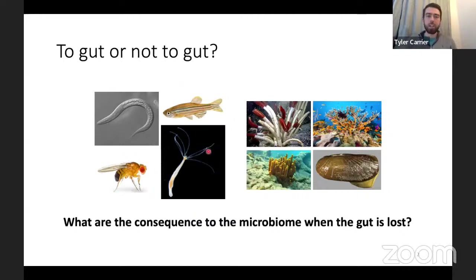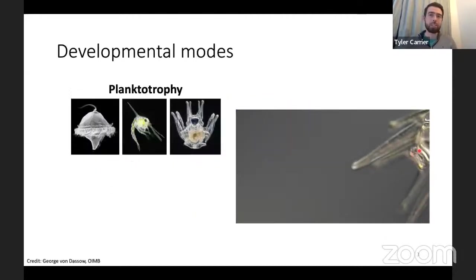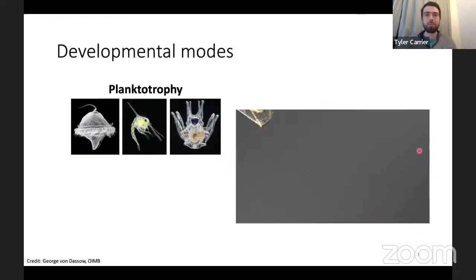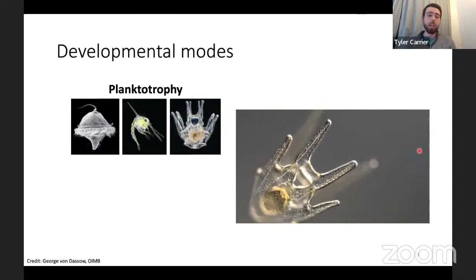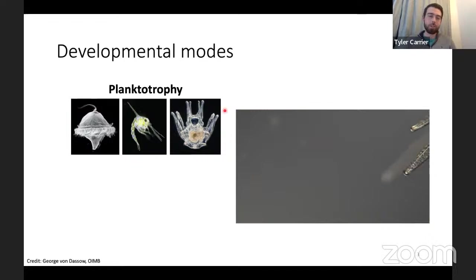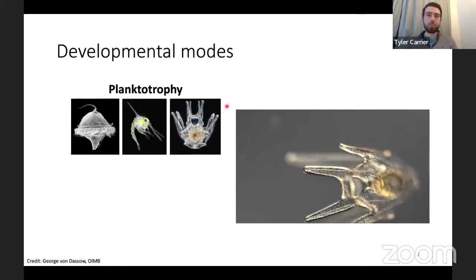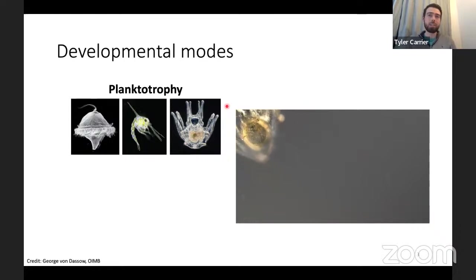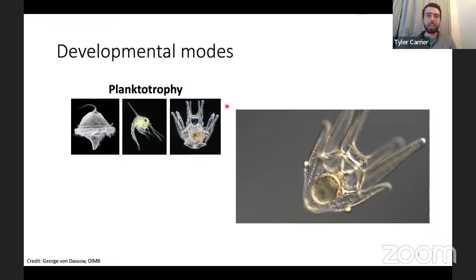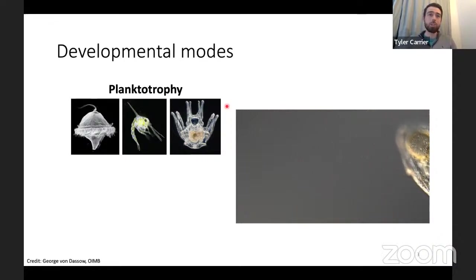I'm an invertebrate biologist and I primarily study the developmental stages of marine invertebrates. This idea of gut versus not gut is actually not that foreign. There are two main types of larvae. The first is planktotrophy — a reproductive strategy where the adult produces as many eggs as possible, and in each of those they provide minimal maternal investment.